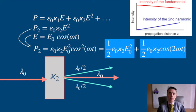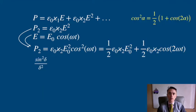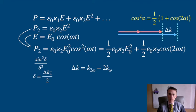The irradiance of the second harmonic is proportional to the sine-square of delta over delta-square, where delta is δKZ over 2. ΔK is the difference between the wave number of the second harmonic and the fundamental, and Z is the distance traveled inside the non-linear medium.